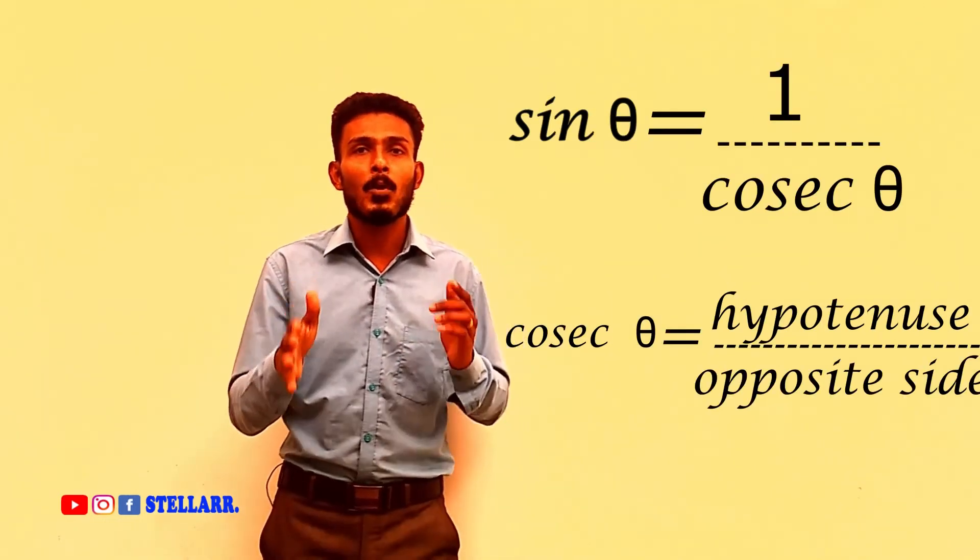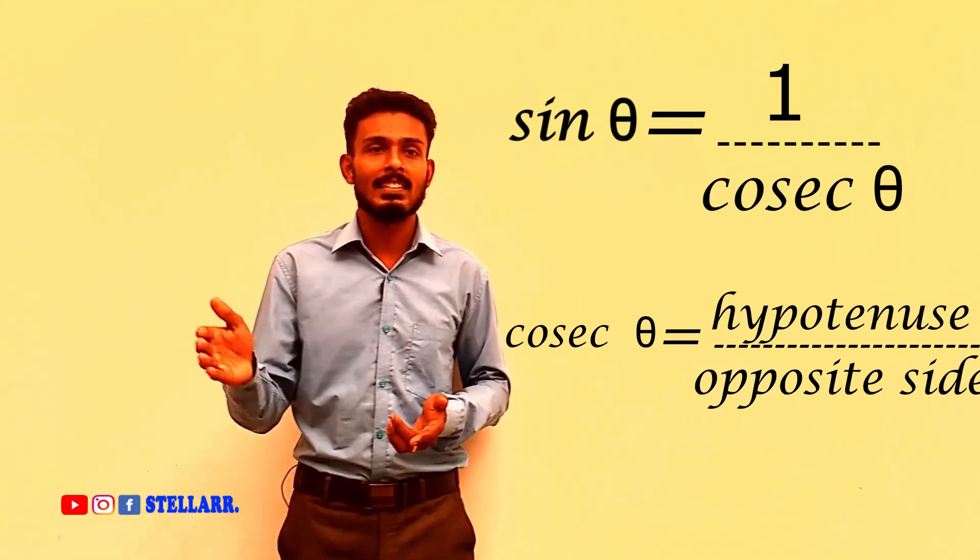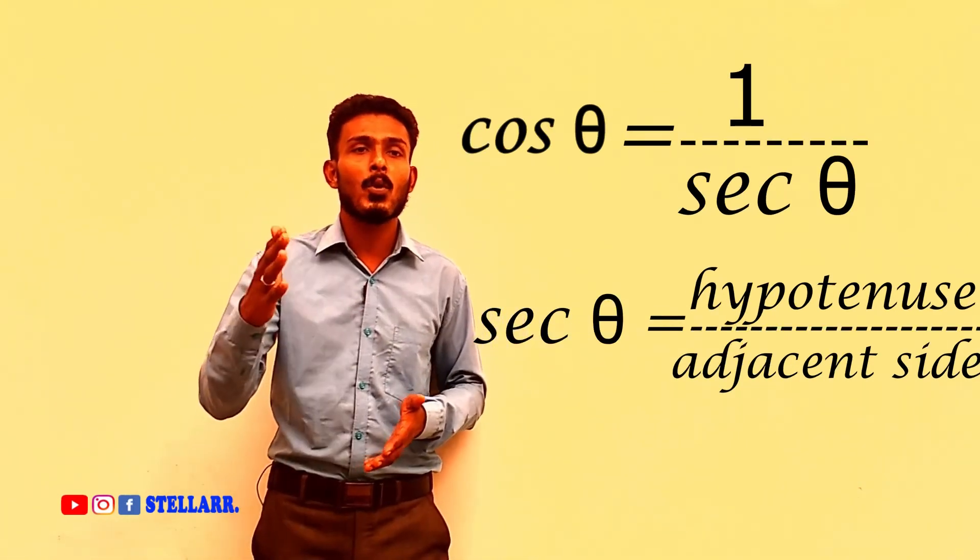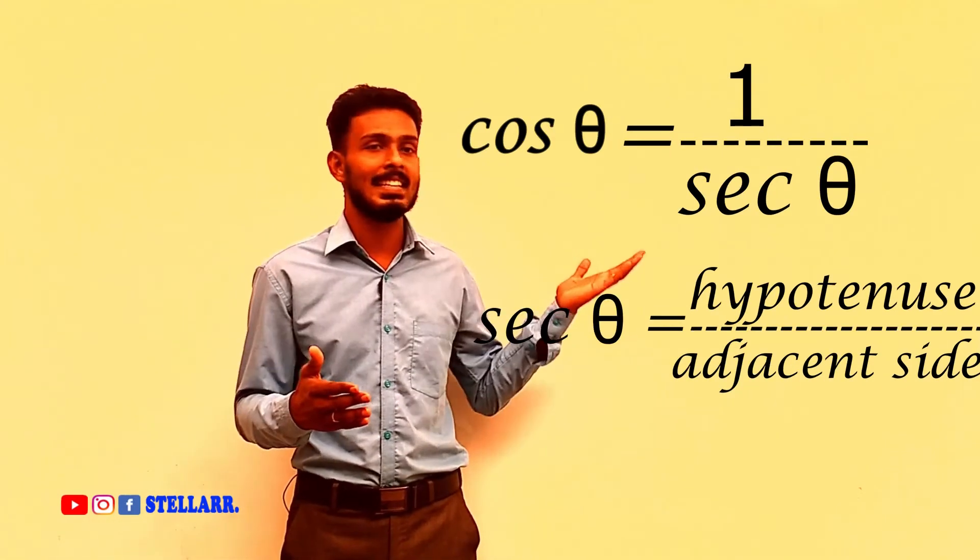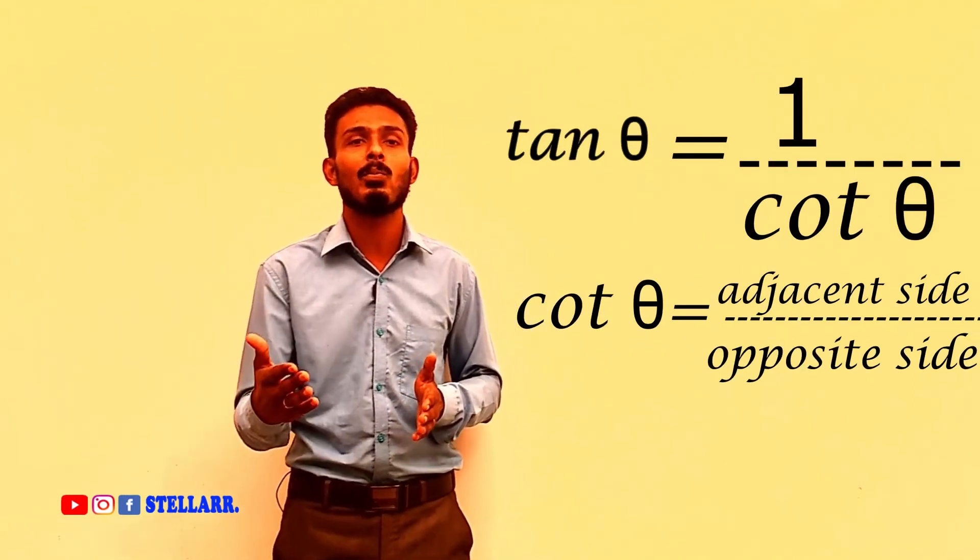That is, if you take the reciprocal of sin theta, we get cosecant theta. If you take the reciprocal of cos theta, we get secant theta. If you take the reciprocal of tan theta, we get cot theta. As simple as that.